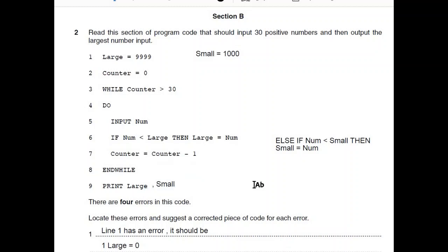In a similar way, the examiner might give you a flowchart or pseudocode and ask you to add or modify it for additional functionality. For instance, if the algorithm is calculating the largest number, the examiner might ask you to calculate the average as well. You would add a variable called total, perform totalling alongside the counter, and after the end while, calculate average = total / counter and then print average — as covered in section 7.4 on standard methods of solution.